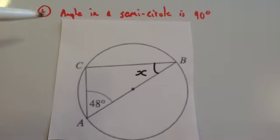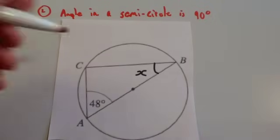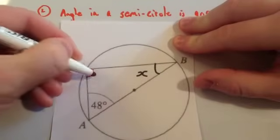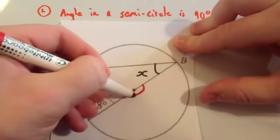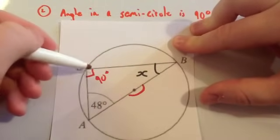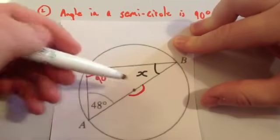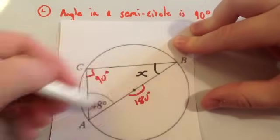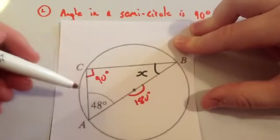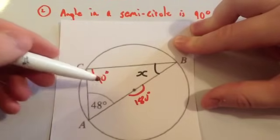The next circle theorem is the angle in a semicircle is 90 degrees. So this angle here is 90 degrees, and it's just a special case of the previous one. Remember circle theorem 1 was the angle at the circumference is half the one at the center. So if this is 180 degrees here, straight line the diameter, therefore that then will be 90 degrees, half of it.